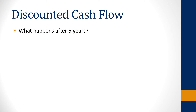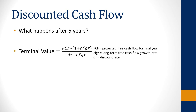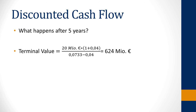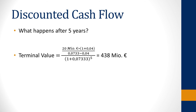However, one must also consider that the company will probably not stop working after five years — it will most likely continue and keep producing free cash flows. This effect is called terminal value. The terminal value is calculated with a formula: multiply the free cash flow of the final year of projection by one plus the long-term cash flow growth rate, then divide by the difference between the discount rate and the long-term cash flow growth rate. Assuming a free cash flow growth rate of 4%, the terminal value is 624 million euros.